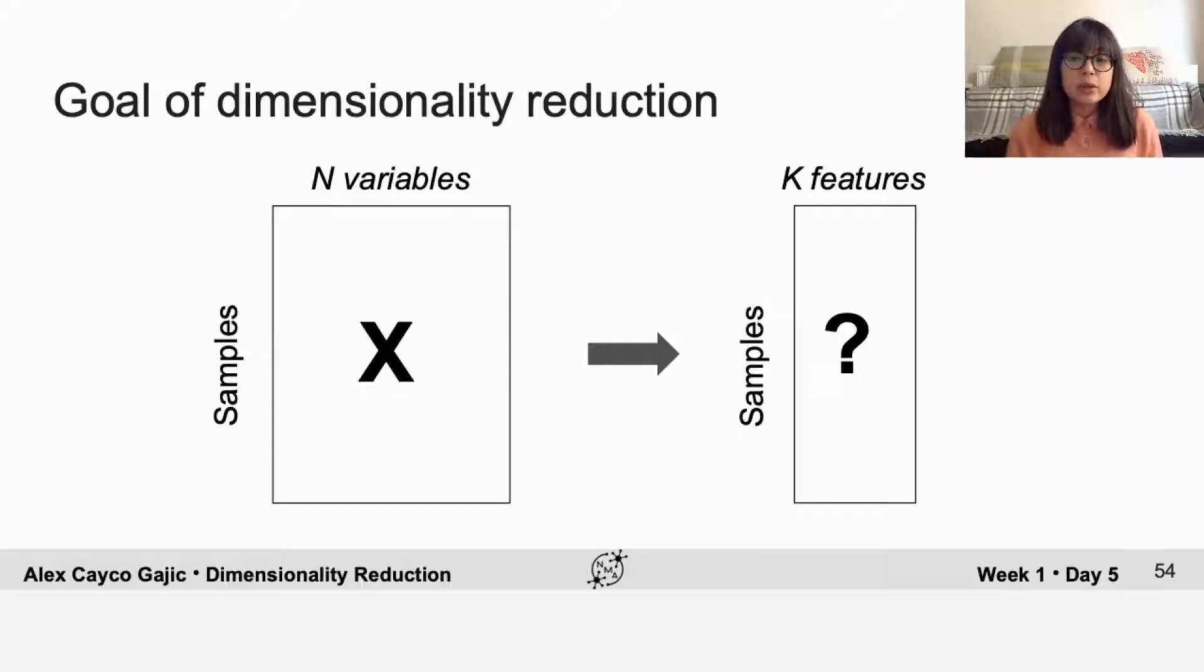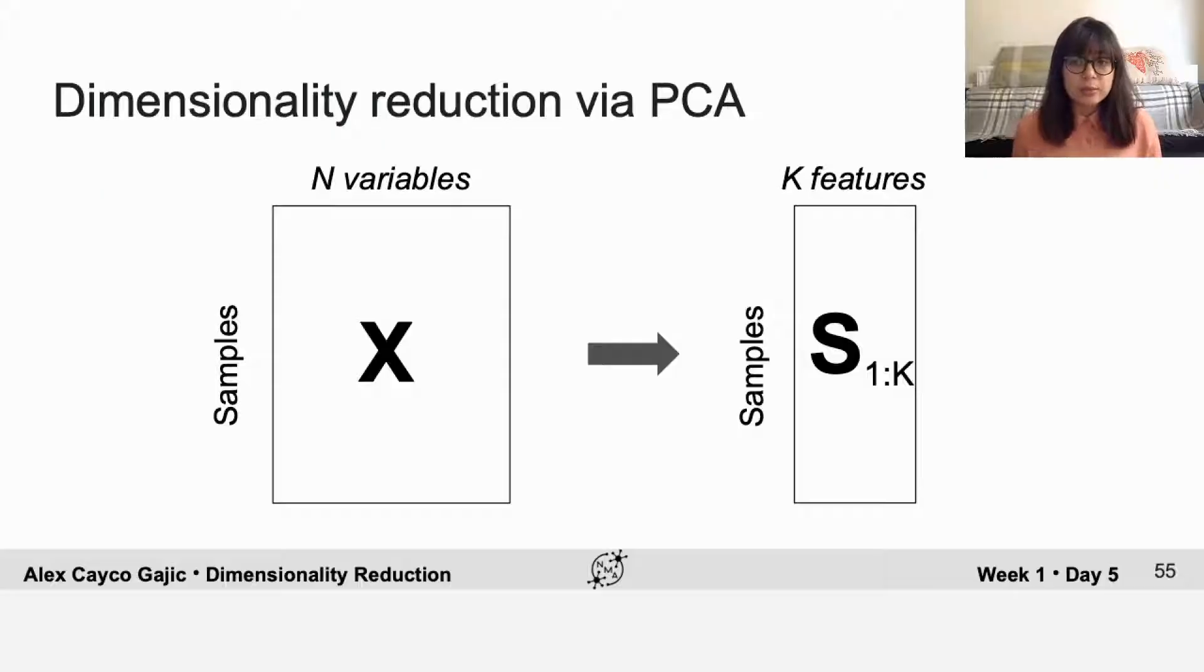We can do this with PCA just by taking the first K principal components. That's because we've already been able to rank the components in terms of how much of the variance of the data they're able to explain.